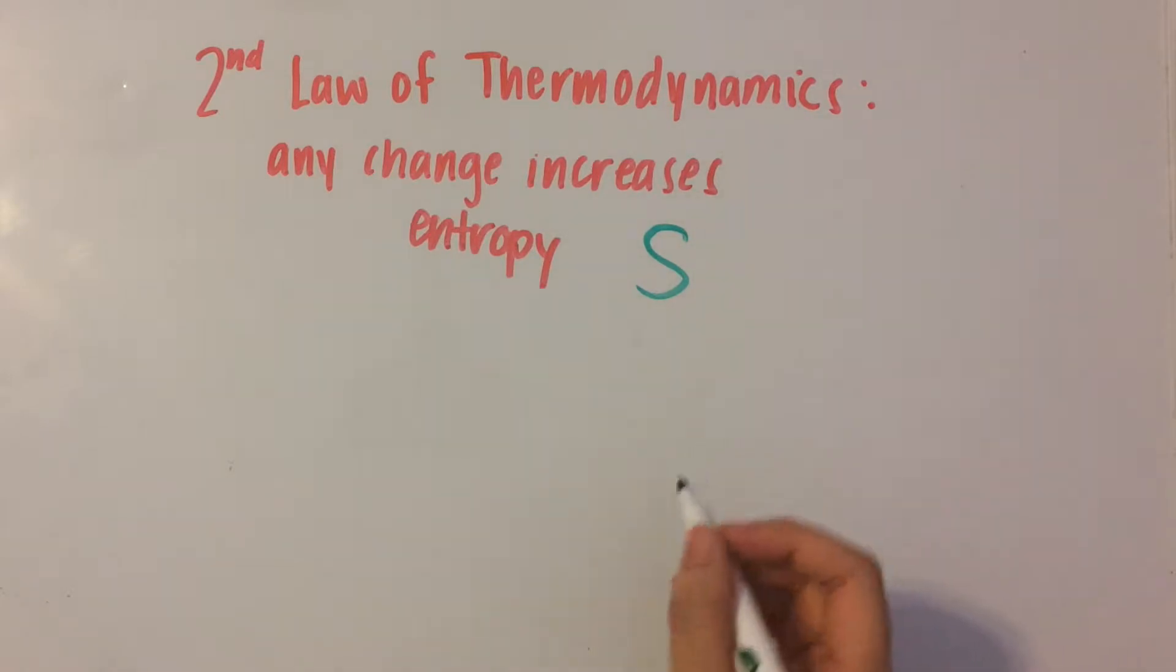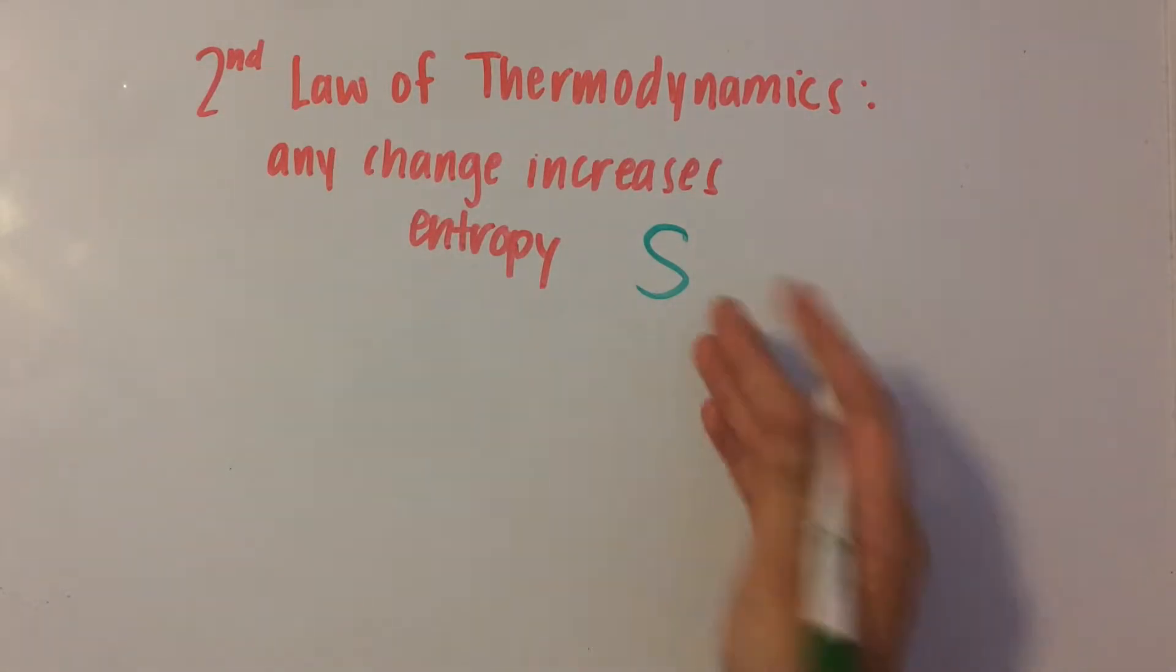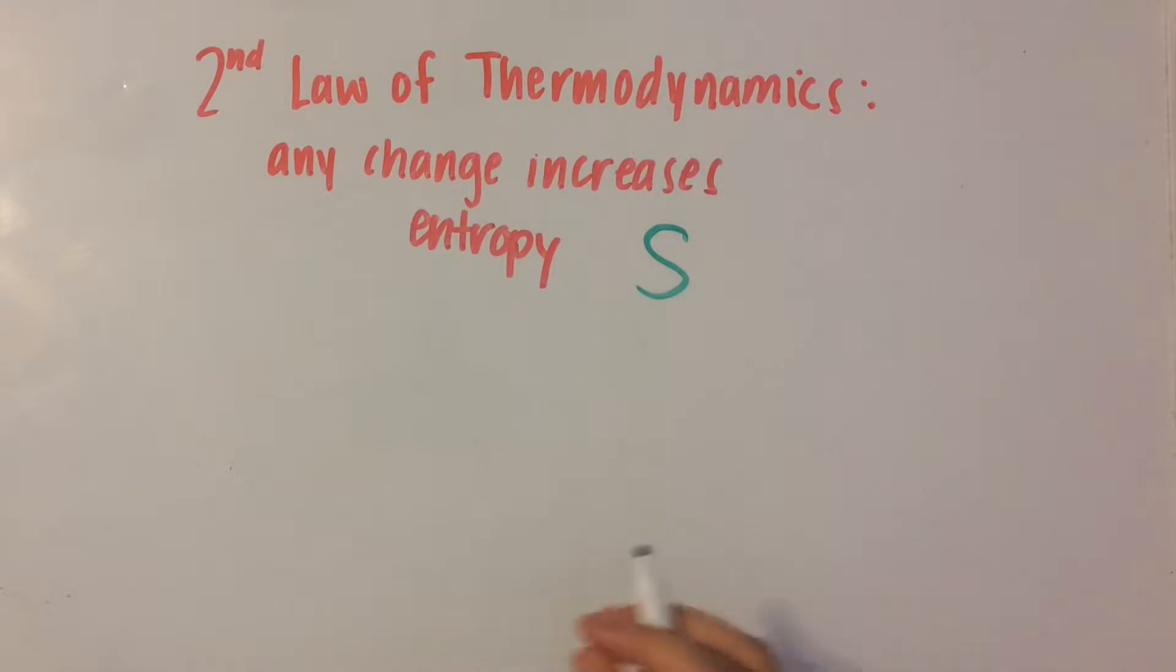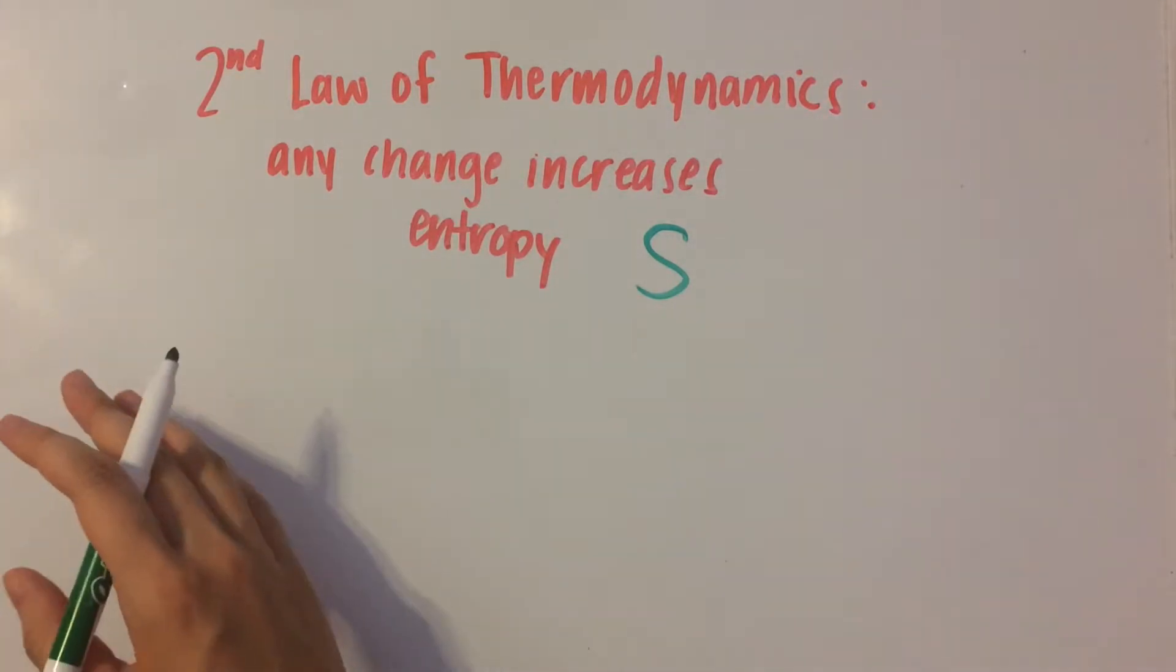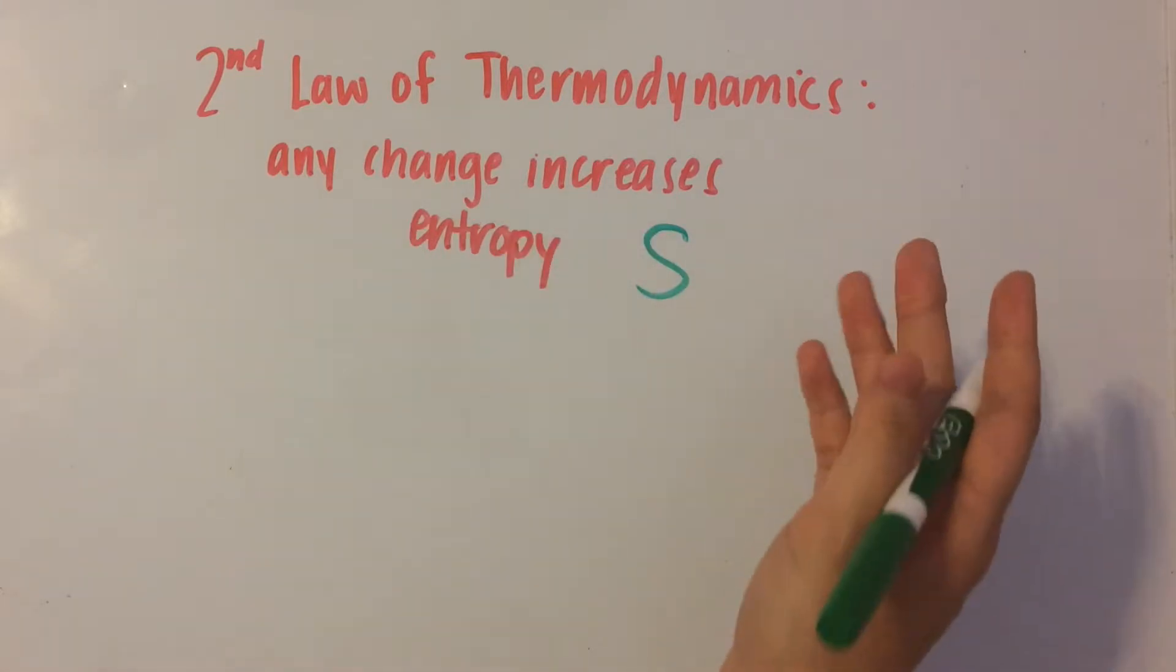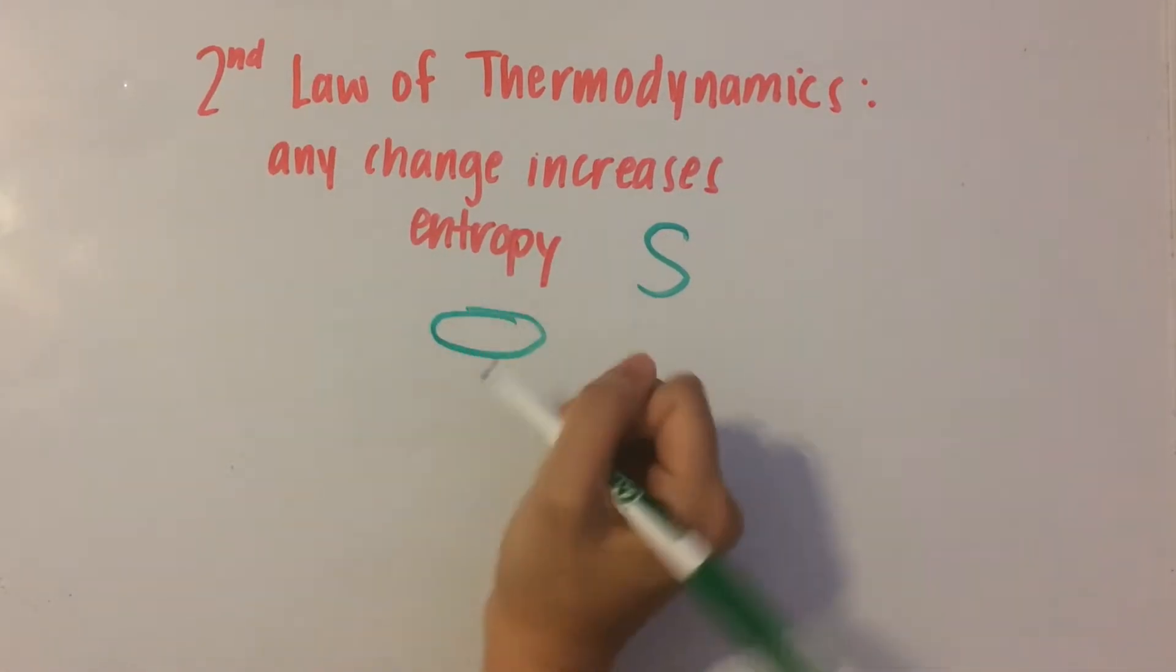Remember that when you're taking a test or doing practice problems, entropy is symbolized by S. As you'll see in most processes, a system will most likely go towards a state of entropy or disorder.